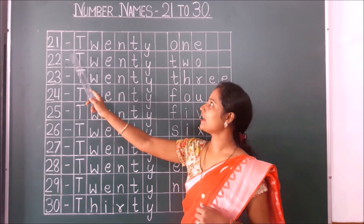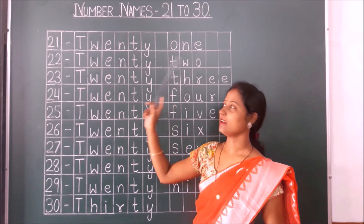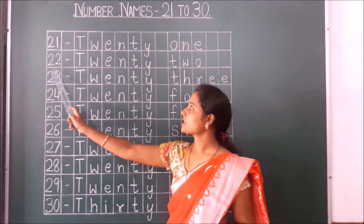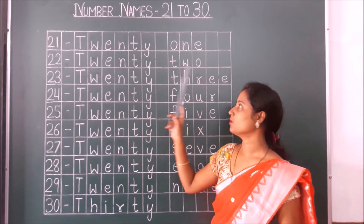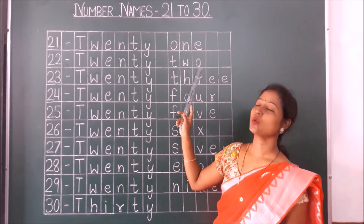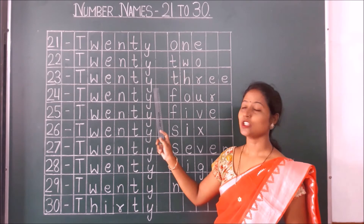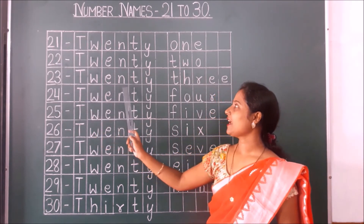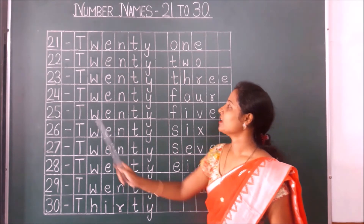Please repeat after me, children. 21: T-W-E-N-T-Y O-N-E, 21. Next is 22: T-W-E-N-T-Y T-W-O, 22. Next is 23: T-W-E-N-T-Y T-H-R-E-E, 23. Children, you know the spelling of three? Yes. Now 24.